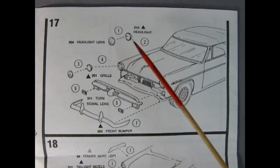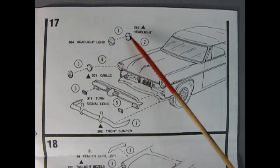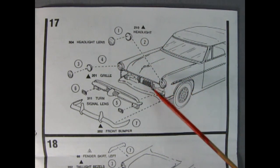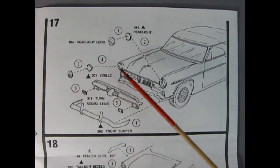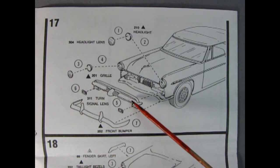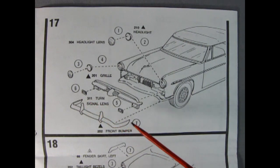So in step 17 we've got our headlight going on, our headlight lenses pop in there and then that all goes into the housing. You do the same on the other side. Then you've got the nice grille which goes in and turn signal lenses underneath and then our front bumper.